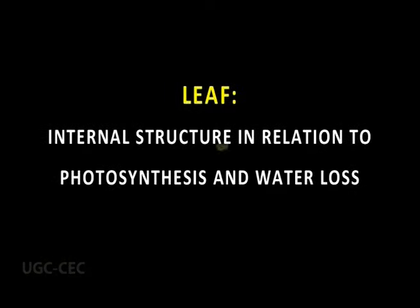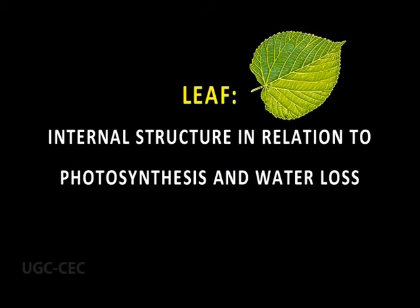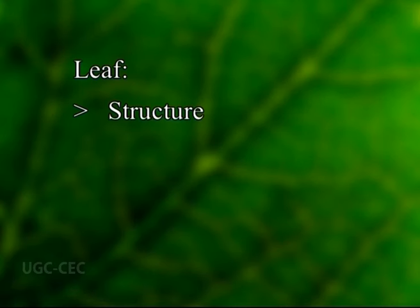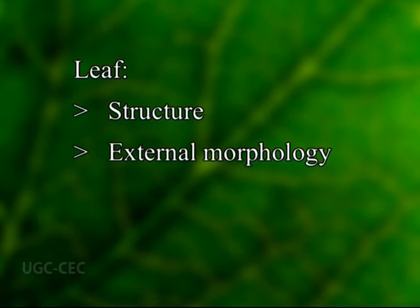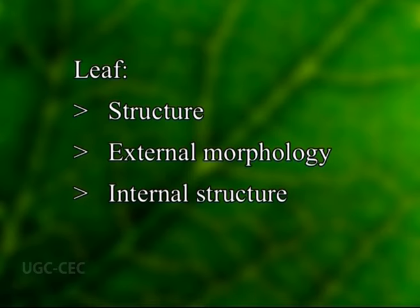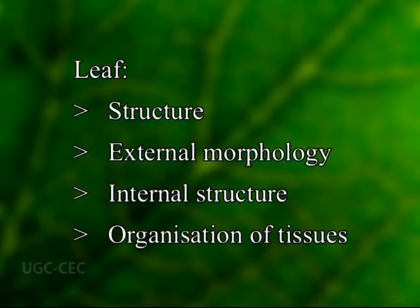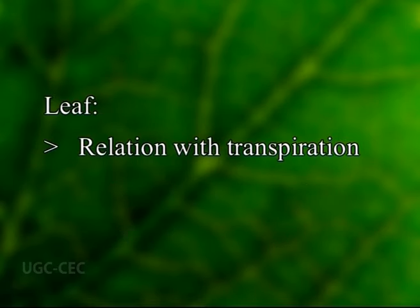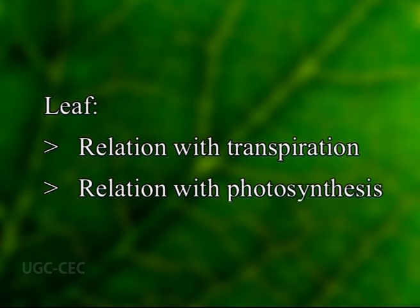This is all about the topic of leaf internal structure in relation to photosynthesis and water loss. In this topic, we have discussed the structure of the leaf — external morphology, internal structure and organisation of tissues — and the relationship of the leaf with transpiration and photosynthesis.